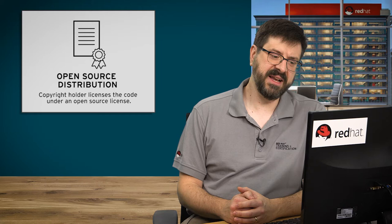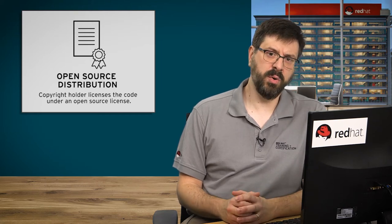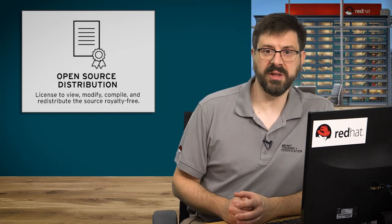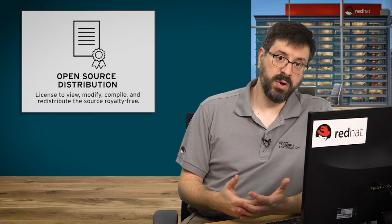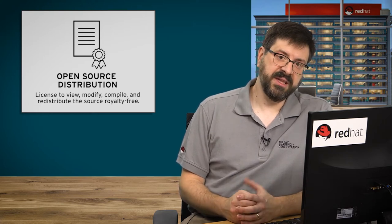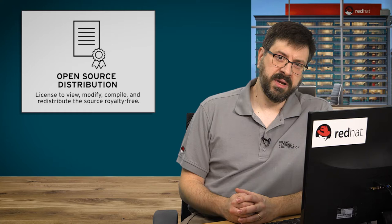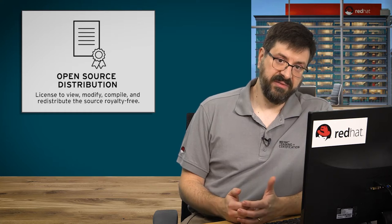The developer may sign over that copyright to someone else or keep it for himself. But either way, the copyright holder then licenses that code to others under an open source license. That license is more flexible than a traditional software license. The license specifies, if it's an open source license, that not only can the customer run the program, but they also can view the source.